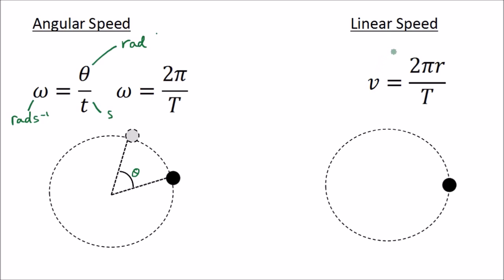Secondly, we can calculate linear speed at any given instant, which is the speed the object would move at if it were released — it would move at that speed at a tangent to the circle. This is simply speed equals distance over time. The circumference of the circle is 2πr and the time is one period T, so linear speed v = 2πr/T.